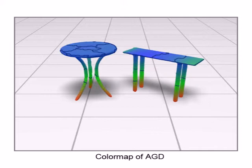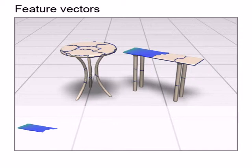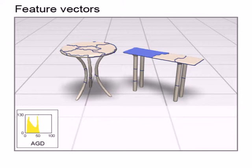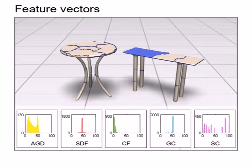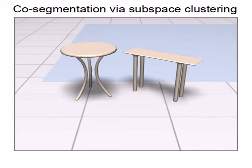This is the color map of AGD on these table models. For each patch, we define a feature vector, which is a histogram capturing the distributions of its triangle's AGD values. Similarly, we define the other four feature vectors for this patch. Now all patches are embedded into each high-dimensional feature space, respectively.